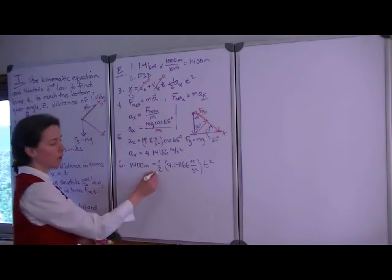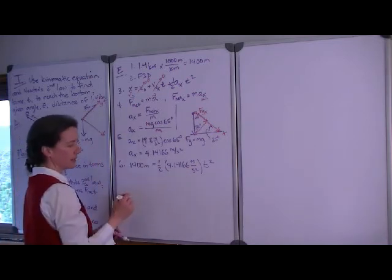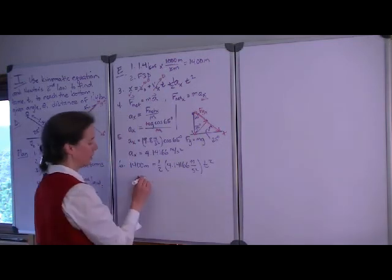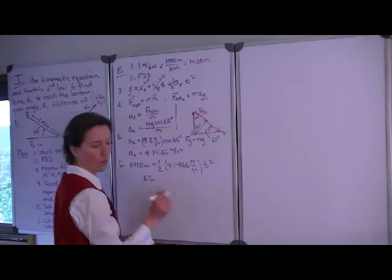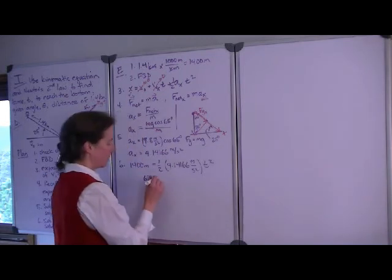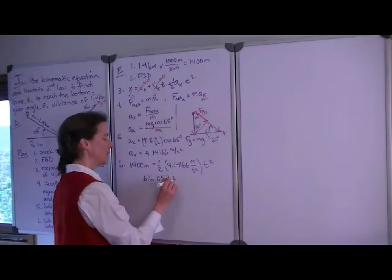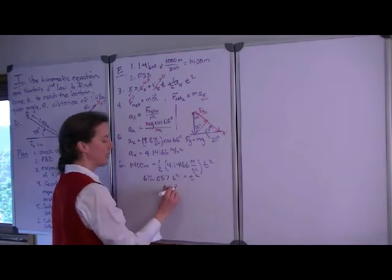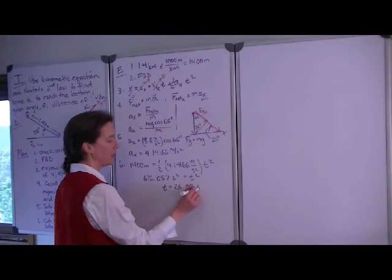We will multiply through by 2 and divide through by this acceleration to find that time squared is equal to 676.057 seconds squared equals time squared. And the time comes out to almost exactly 26 seconds.